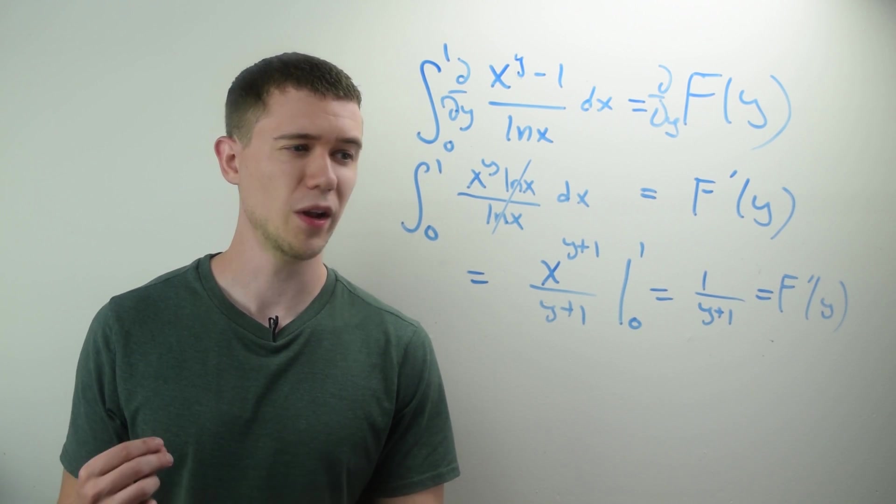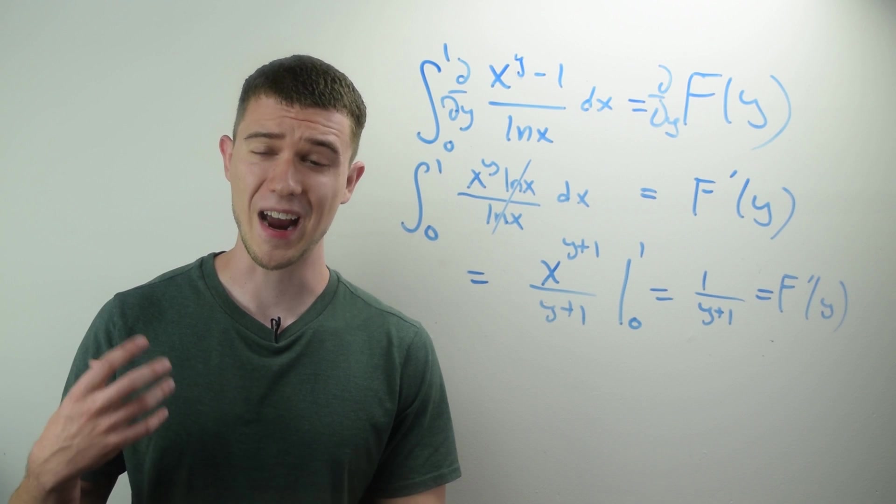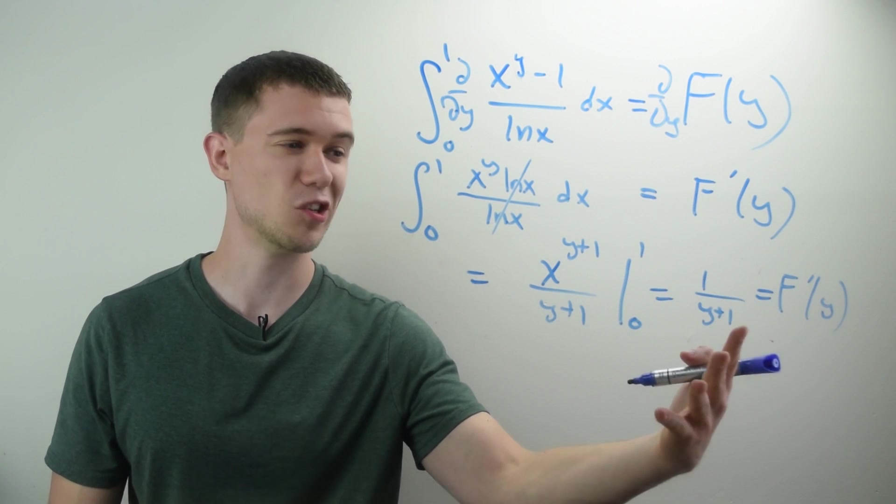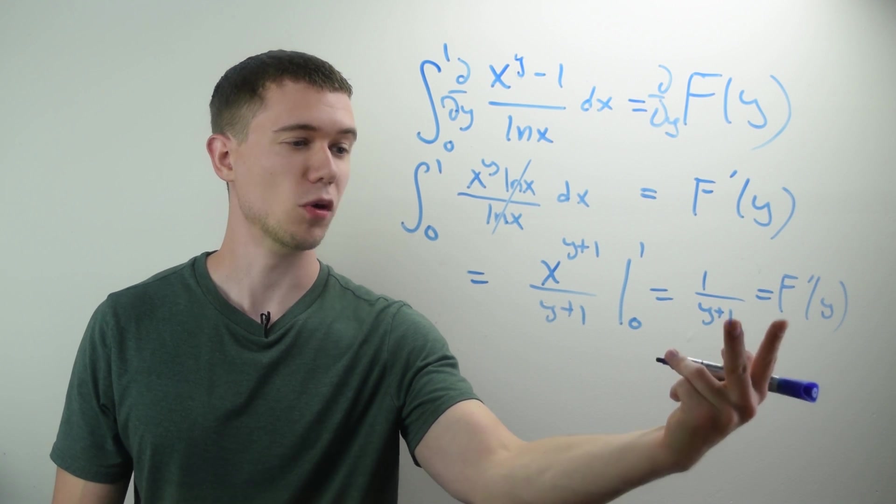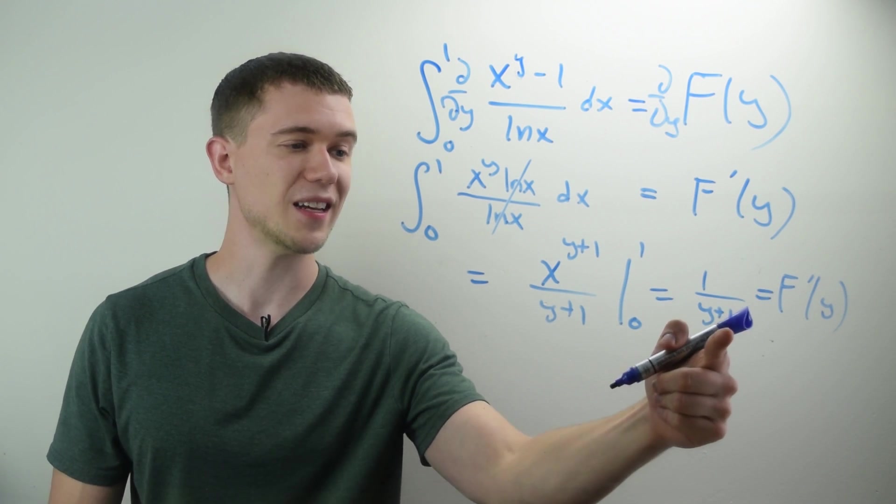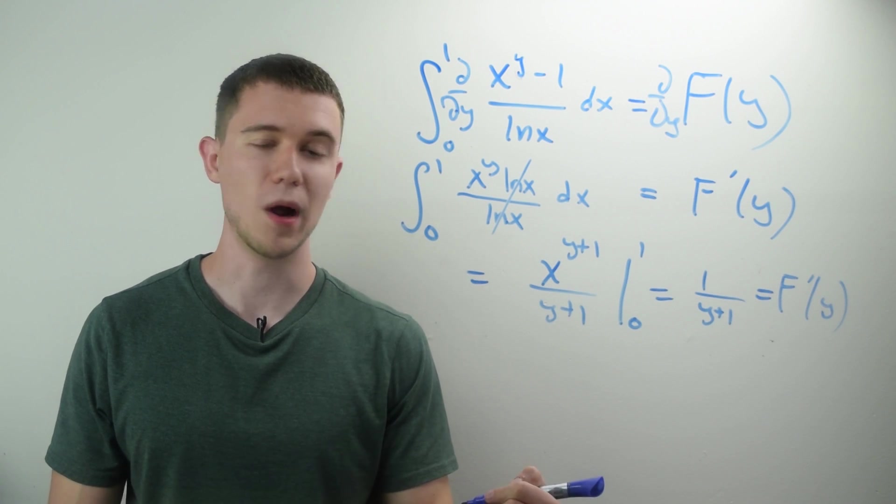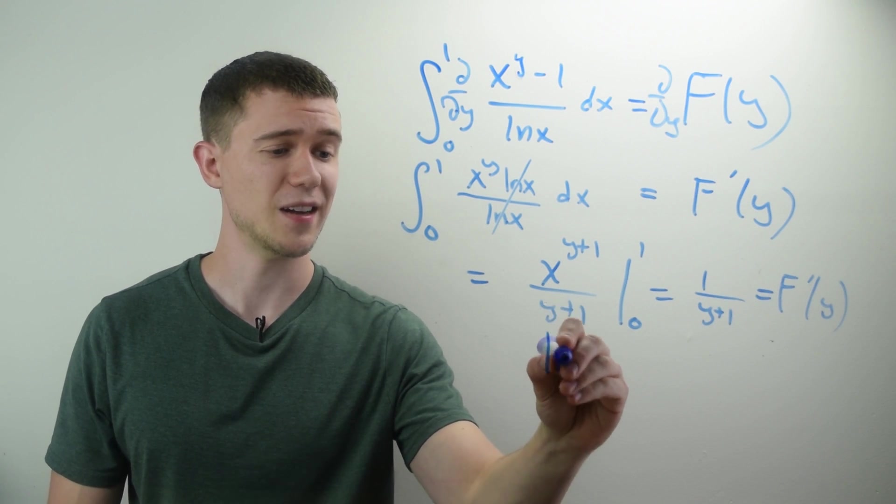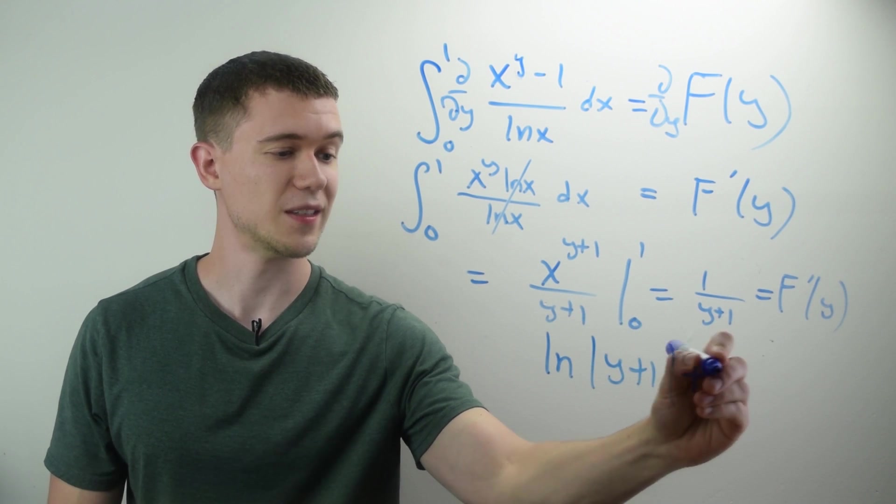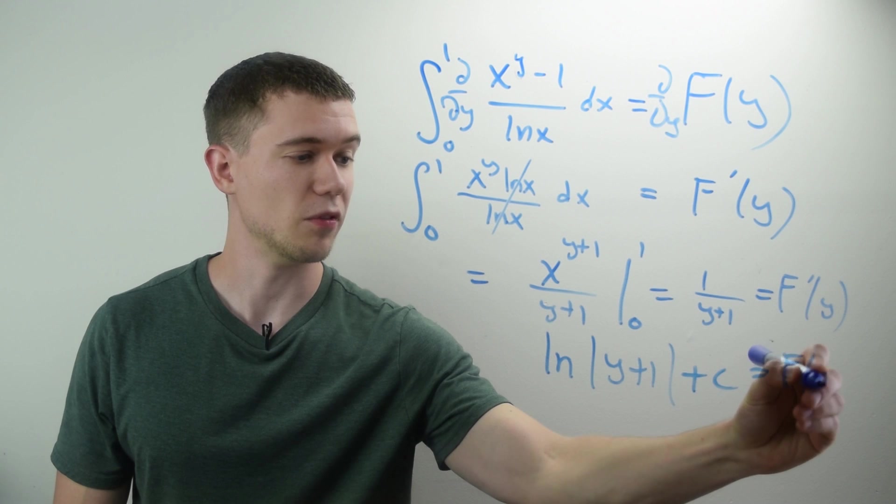Well, that's not quite what I wanted. I really wanted capital F of y. So I need to now integrate, I need to take another anti-derivative with respect to y. Well, if I anti-derive with respect to y of both sides here, what's the anti-derivative of 1 over y plus 1 with respect to y? Well, that's the natural log of the absolute value of y plus 1 plus c. And this is capital F of y.